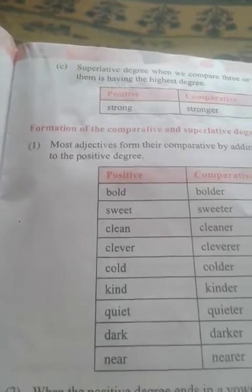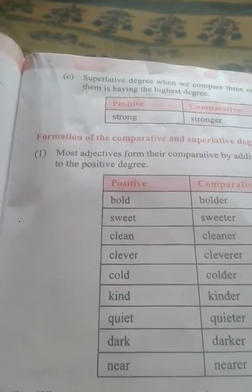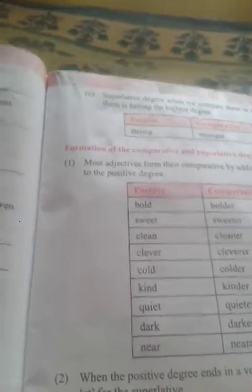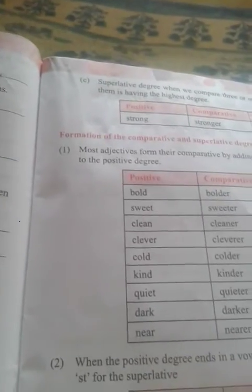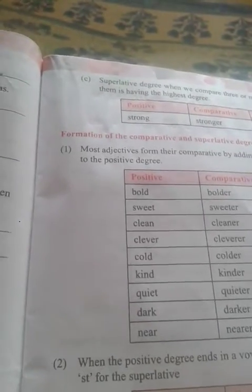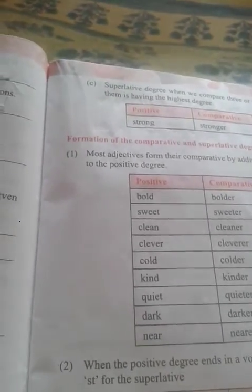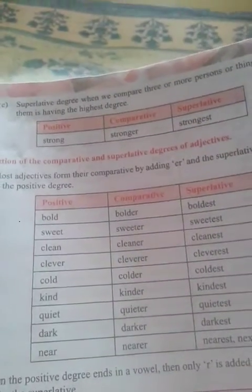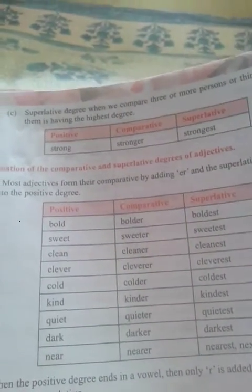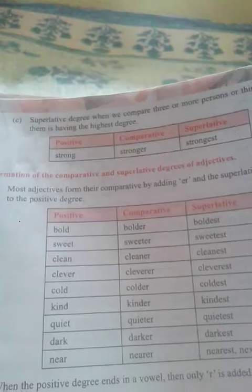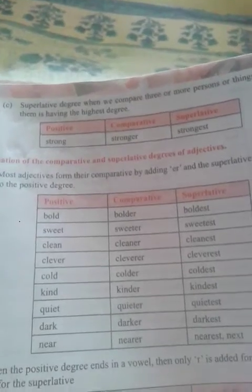Hence, every adjective of quality has three degrees. Positive degree: when we speak of only one person or thing. Comparative degree: when we compare two persons or things. Superlative degree: when we compare three or more persons or things and one of them has the highest degree. Positive with one, comparative with two, and superlative with three and more. For example: positive — strong, comparative — stronger, superlative — strongest.